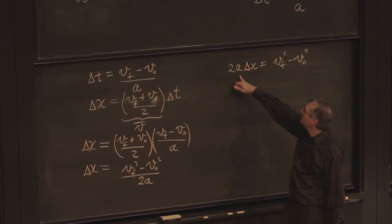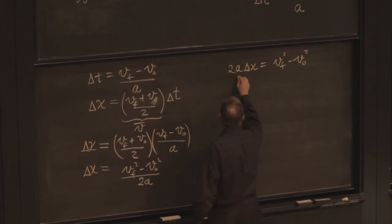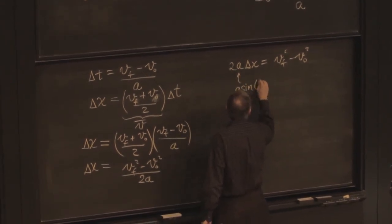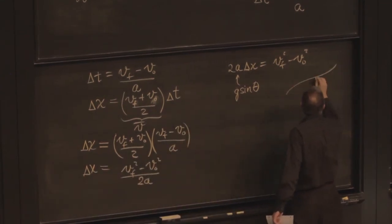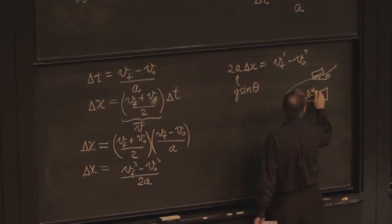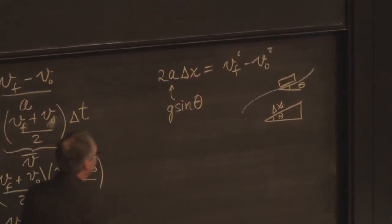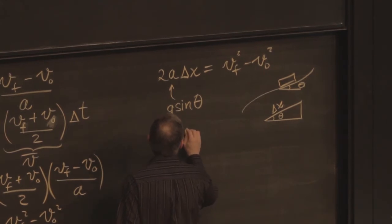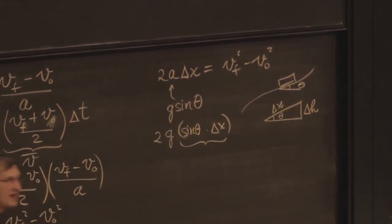But we already figured out, depending on the slope, what a should be in this case. What should the acceleration be? It should be g times the sine of whatever angle is describing that little stretch. So where we are up there, we have a little stretch. So we have, at the moment, some little angle theta. And we have a delta x, which is the distance traveled down the slope. So this is the delta x. That would be theta. And the acceleration would be g sine theta. So g sine theta delta x. So 2g sine theta times delta x is just the height change, delta h.